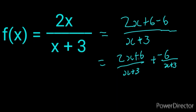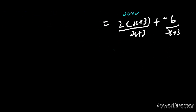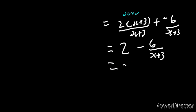Another thing that makes this the next level is that we're going to have to factorize. Whenever we have a coefficient, we're going to have to factorize. We're going to end up having 2 times x plus 3, all over x plus 3, plus negative 6 over x plus 3. So we have x plus 3. From here, x plus 3 cancels, leaving 2. So we're going to have 2 plus negative 6 over x plus 3. When we rearrange, we have negative 6 over x plus 3 plus 2, and there we have it — written in the form of a over x minus p plus q.